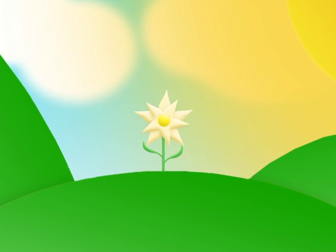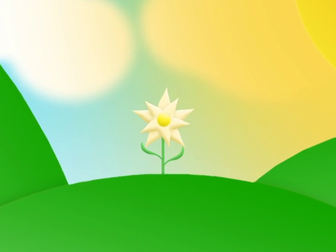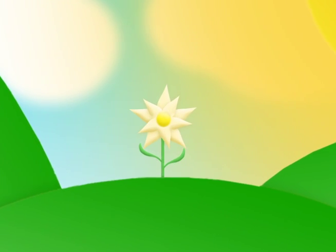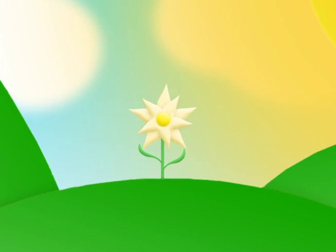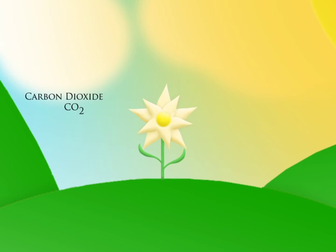Photosynthesis in plants mainly occurs in the leaves of the plant. For photosynthesis to happen, three things must be present in the leaves: carbon dioxide, water, and sunlight.